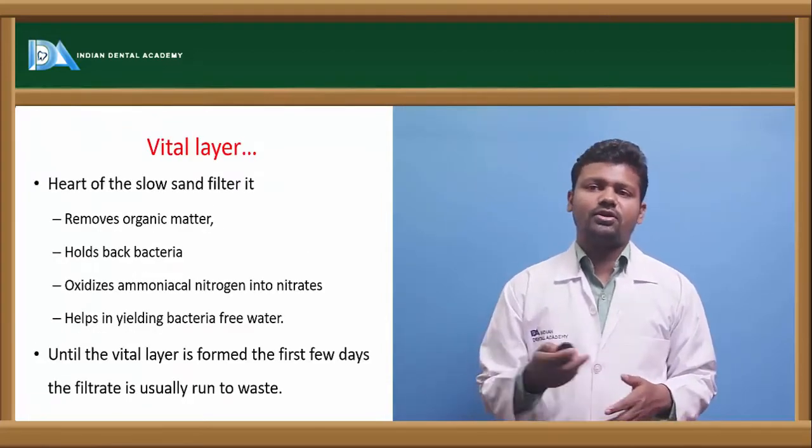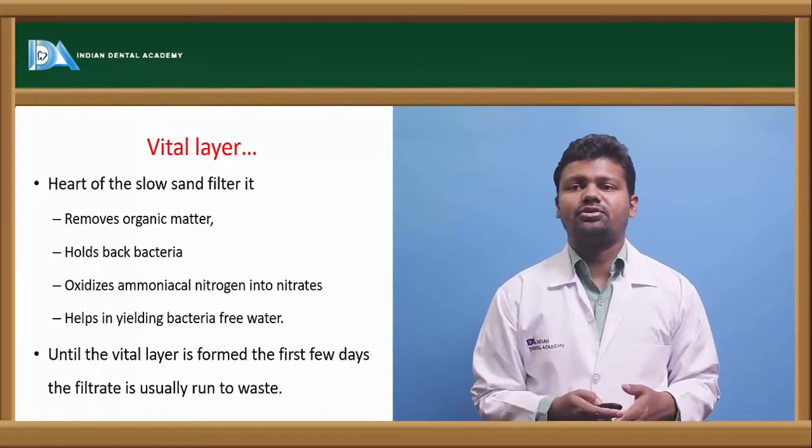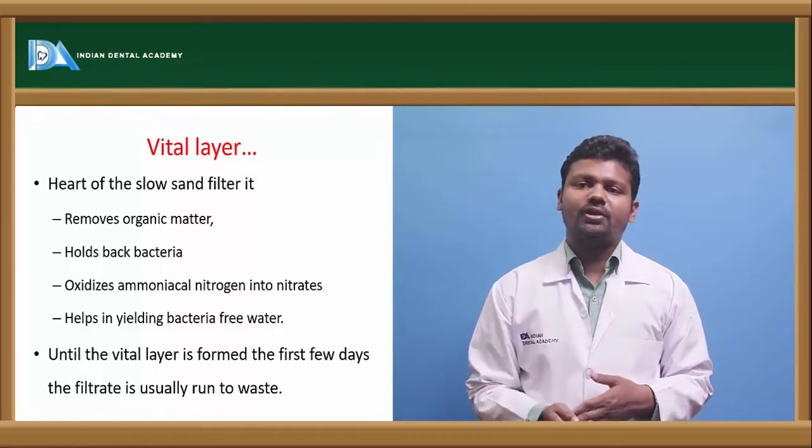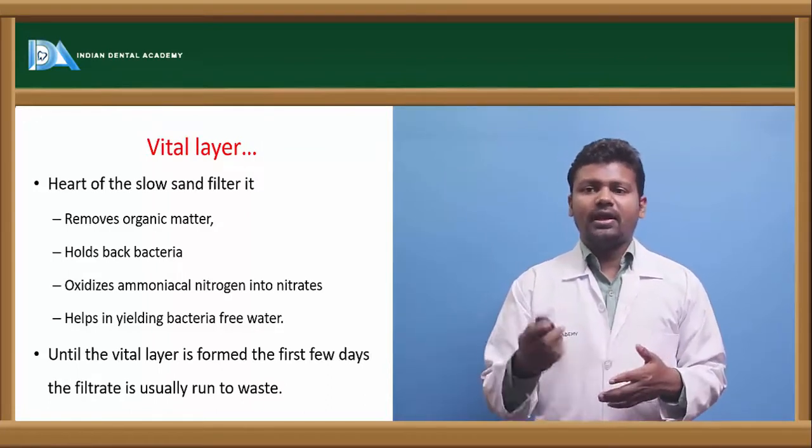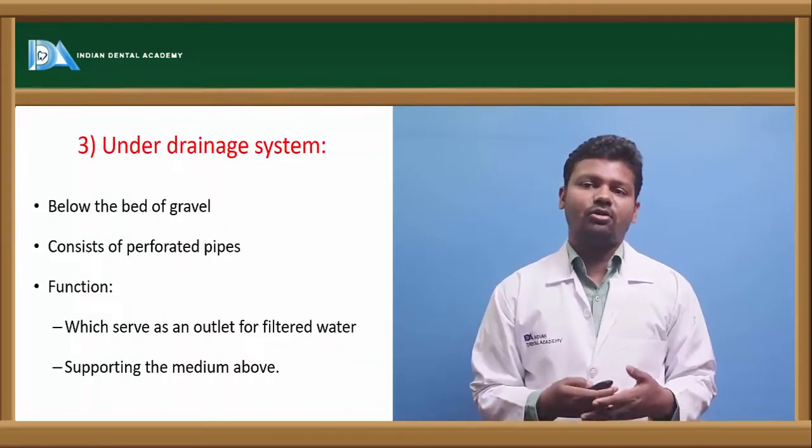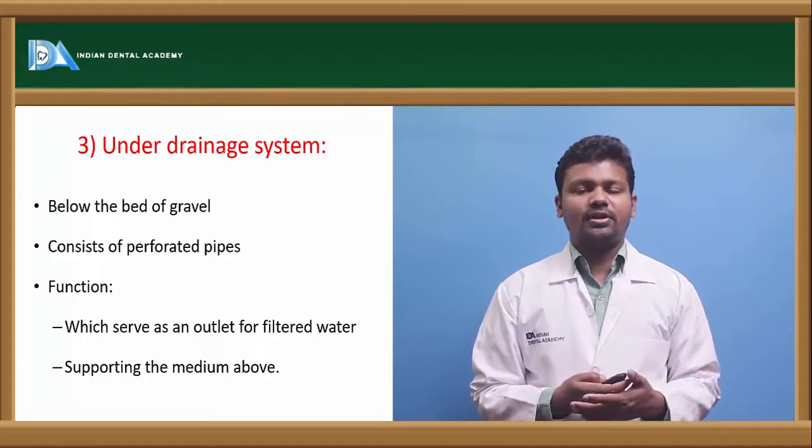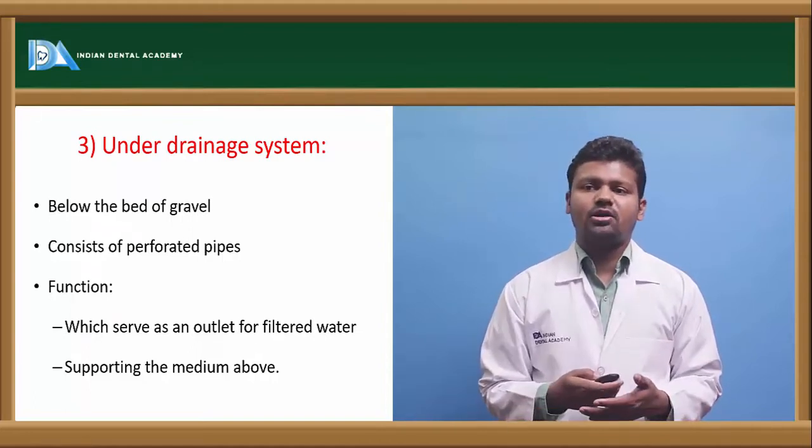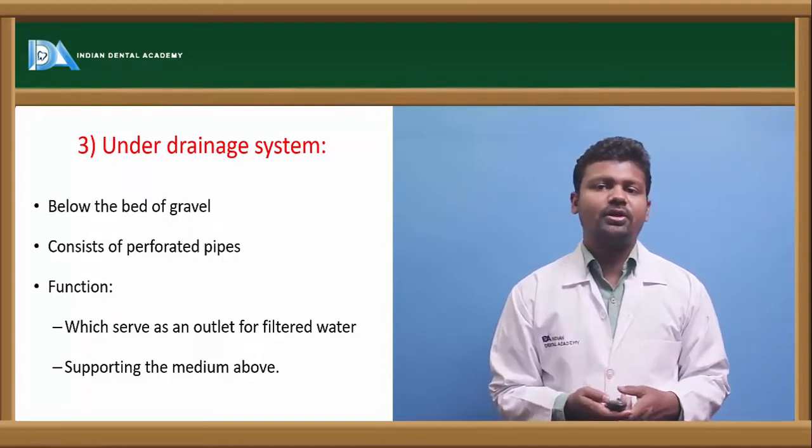The vital layer is the heart of slow sand filters. It removes organic matter, algae, bacteria, helps in yielding water free of bacteria. The under drainage system below the bed of gravel consists of perforated pipes, functions as an outlet of filtered water supporting the medium above.